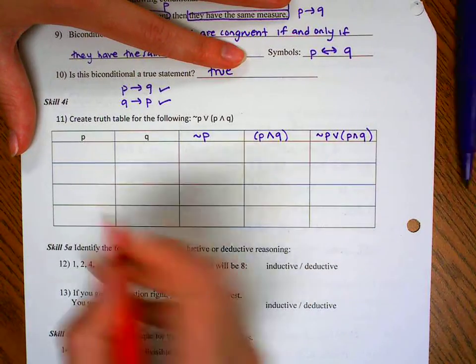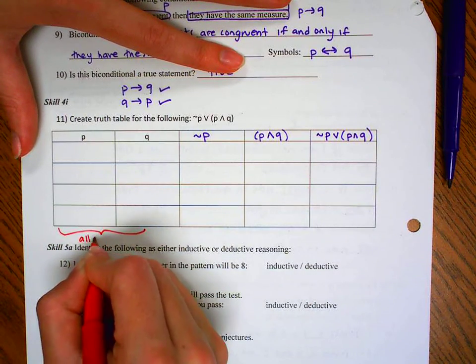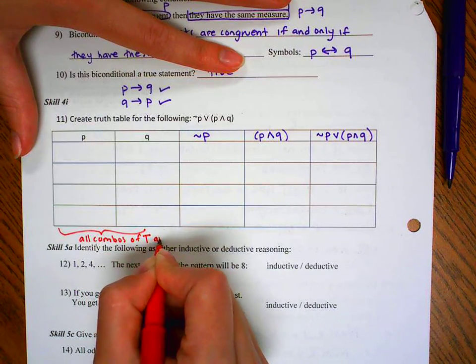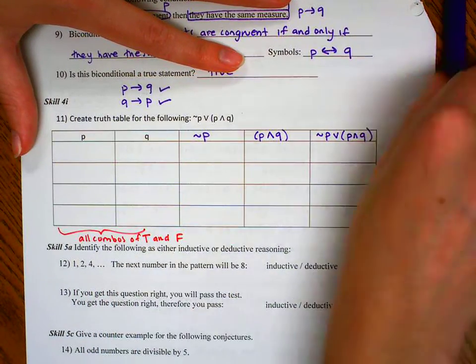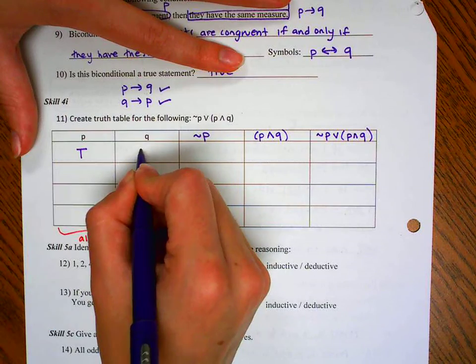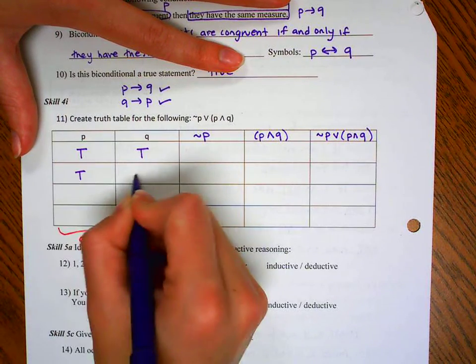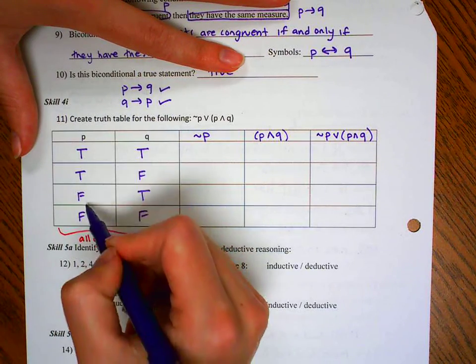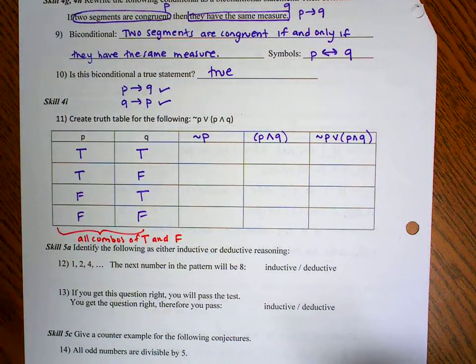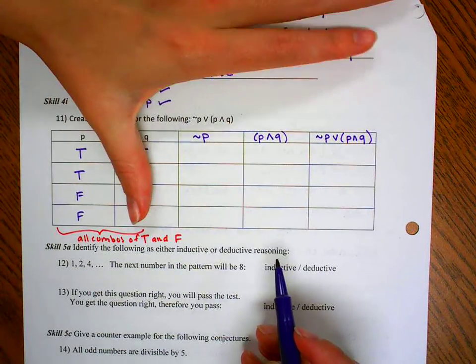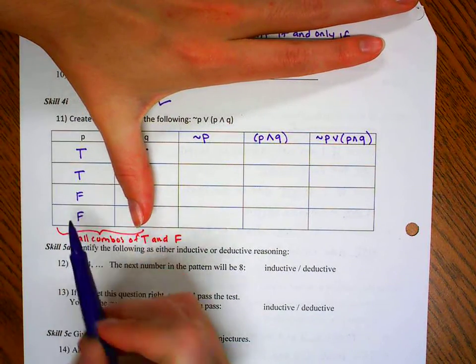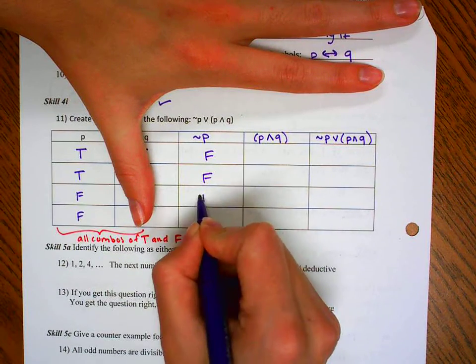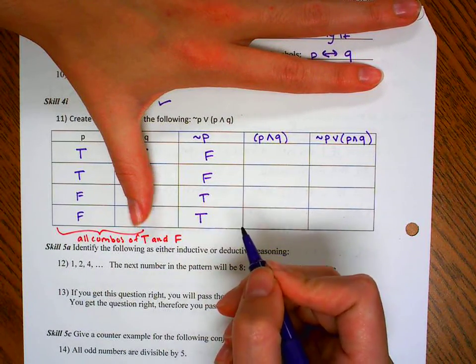Now let's start filling in our columns. For here, we really just want all the possible combinations of true and false. The way I've told my class to do that is we're going to always just follow this pattern of true, true, true, false, false, true, false, false. And so I do two trues, two falses, and then every other. So if I want to do the negation of P, I'm going to take my P column and negate them. So the negation of true is false, the negation of true is false, and then true, true.